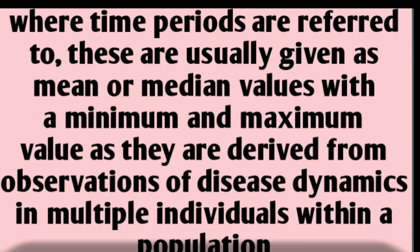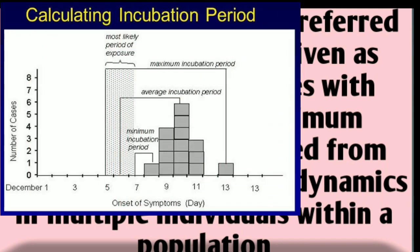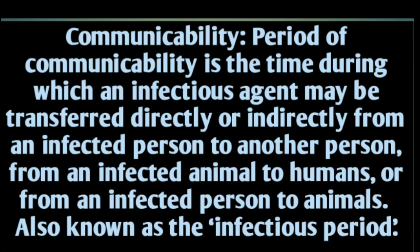These time periods are usually given as mean or median values with minimum and maximum values, as they are derived from observations of different individuals within a population. A large population is studied, and from the minimum and maximum values, the mean is calculated to determine the incubation period or latent period.